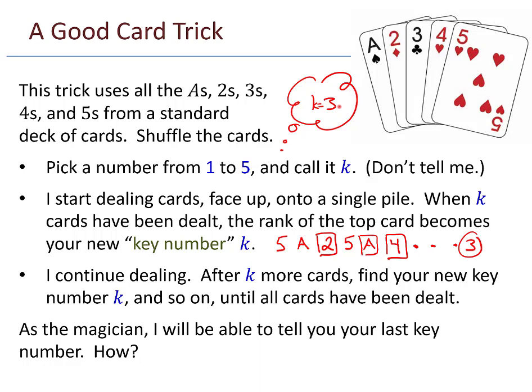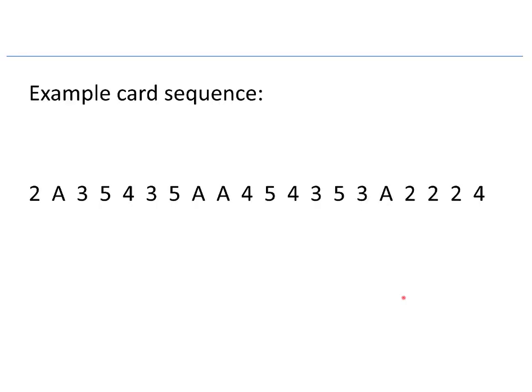As a magician, I will be able to tell you your last key number. How? At the end of all this process, when all the cards have been dealt, I will look you square in the eye, and I will say, your key number is 3, or 5, or 4, or whatever it is. But somehow, I will know what that key number is. And throughout this process, you're only thinking to yourself. You started thinking the K, and you didn't tell me anything. At this point, the cards run out and your final key value is 2.